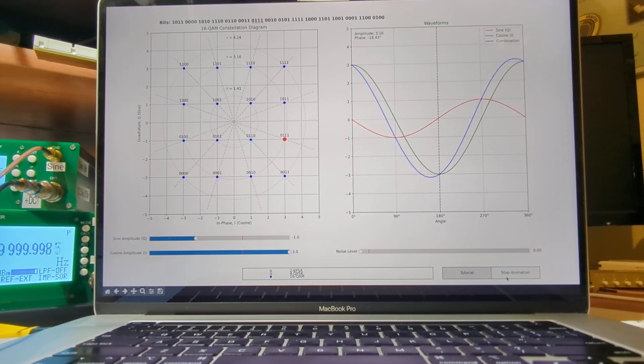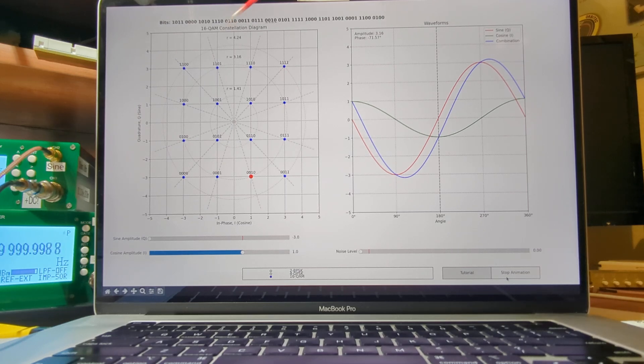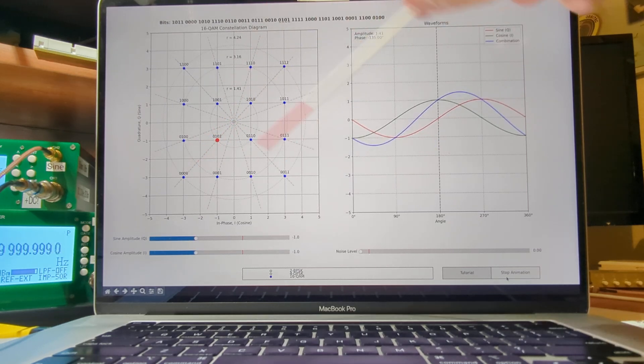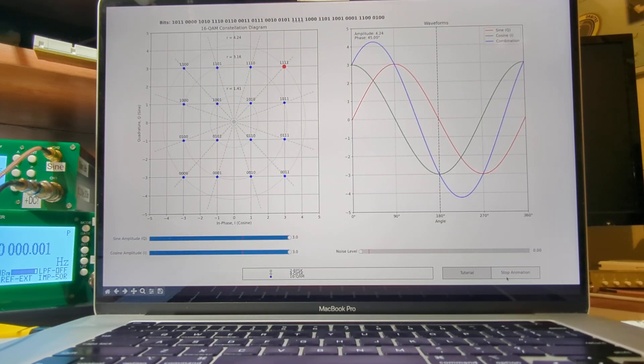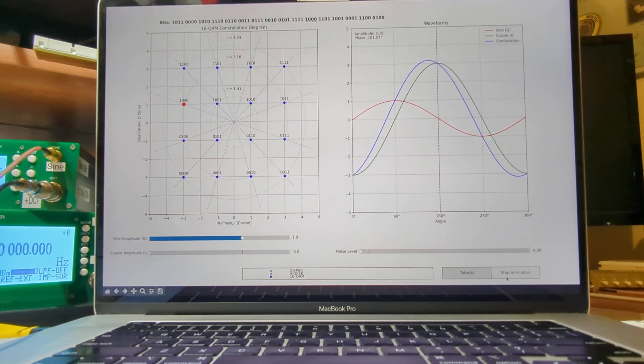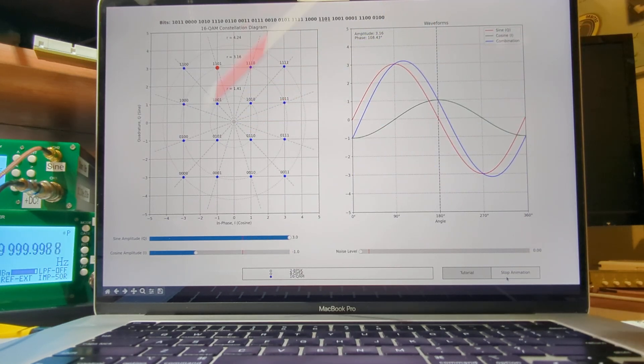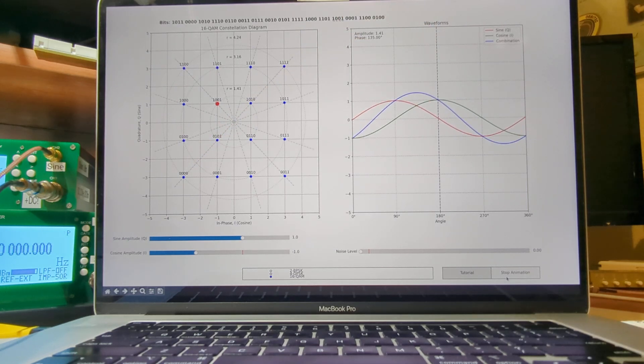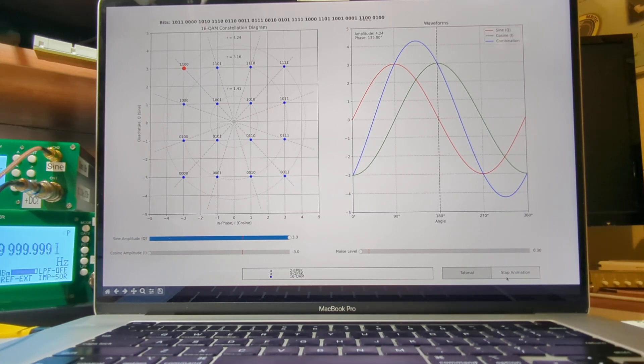So the blue waveform represents the symbols on the constellation diagram. And in 16 QAM, we have 16 unique symbols that can be sent by a combination of amplitude and phase angle. And therefore, we can send four bits or represent four bits with each of those 16 different waveforms.